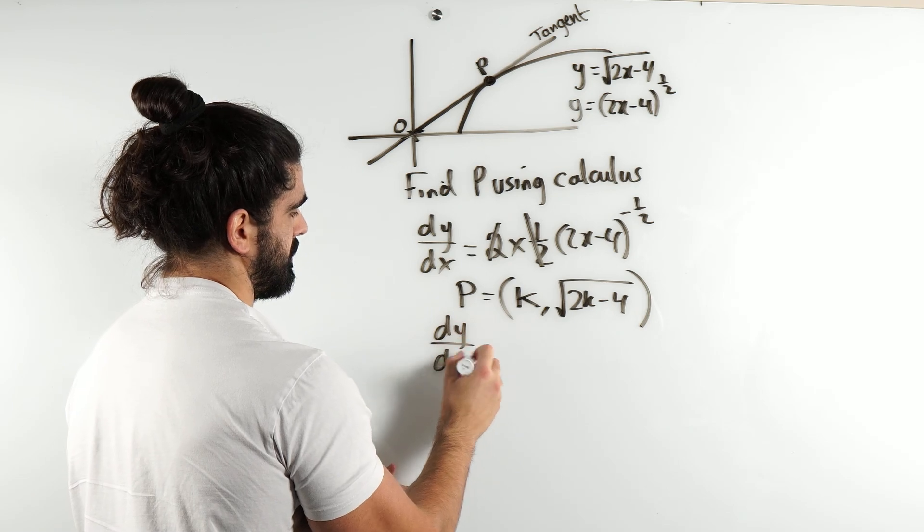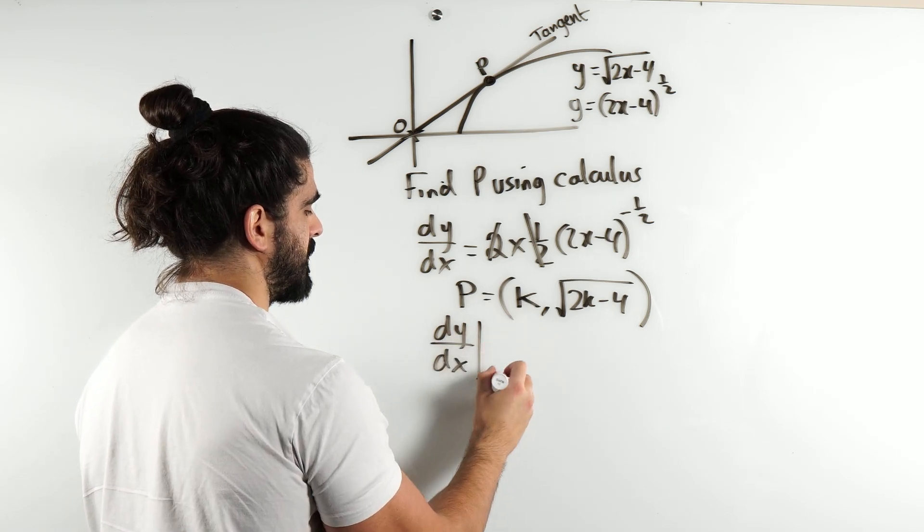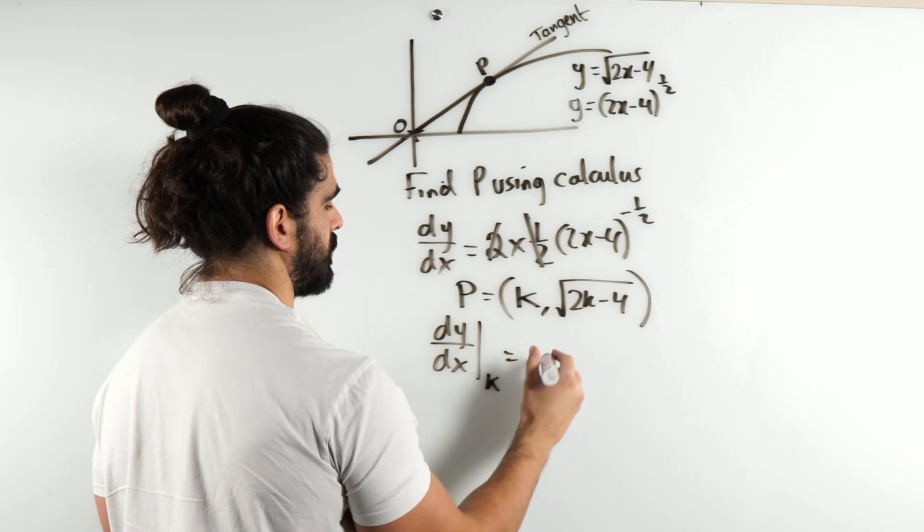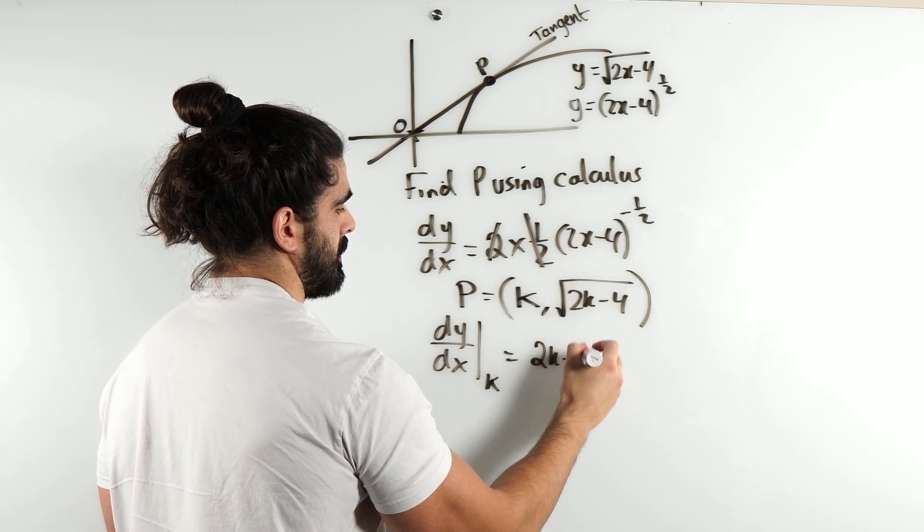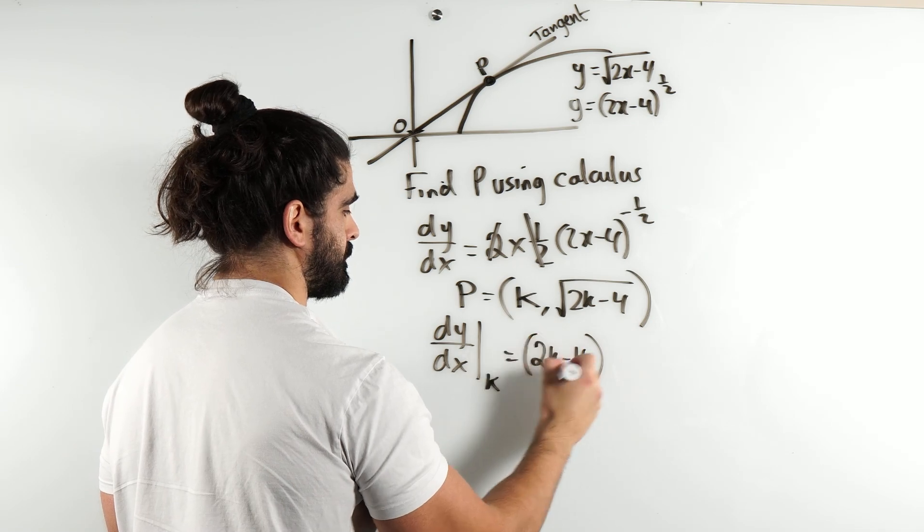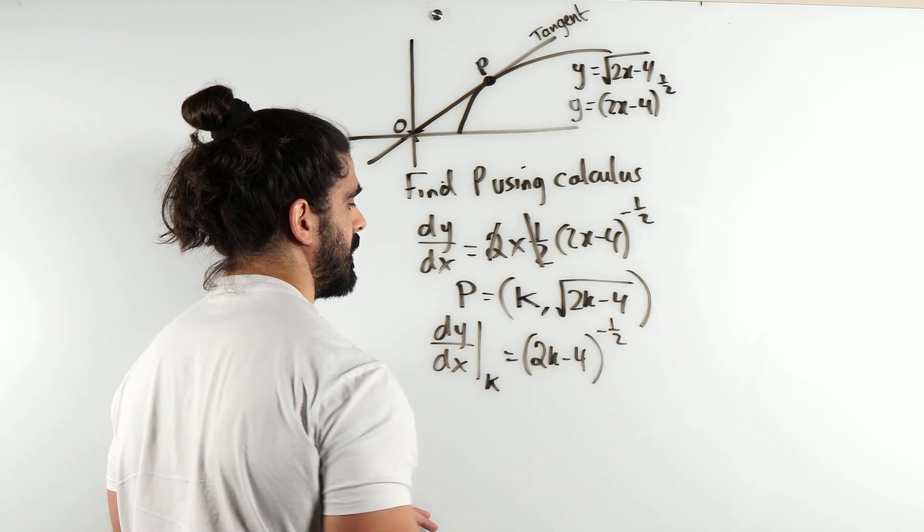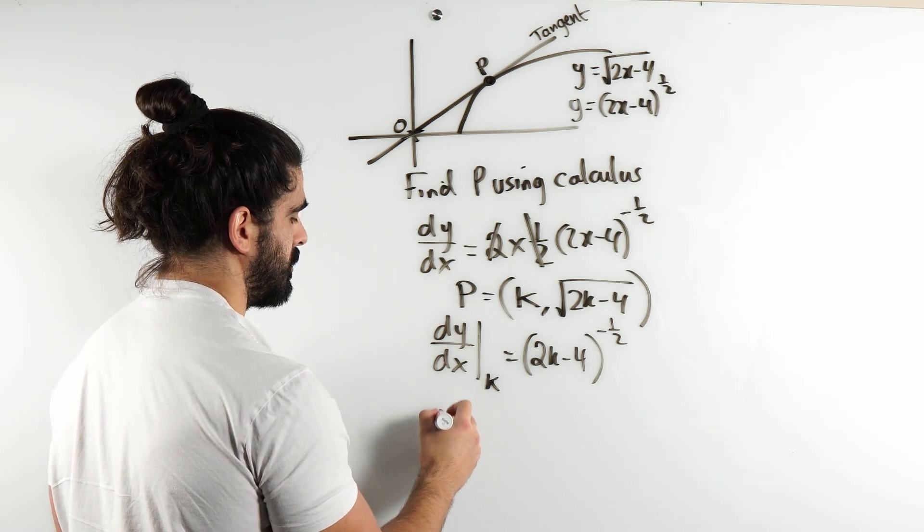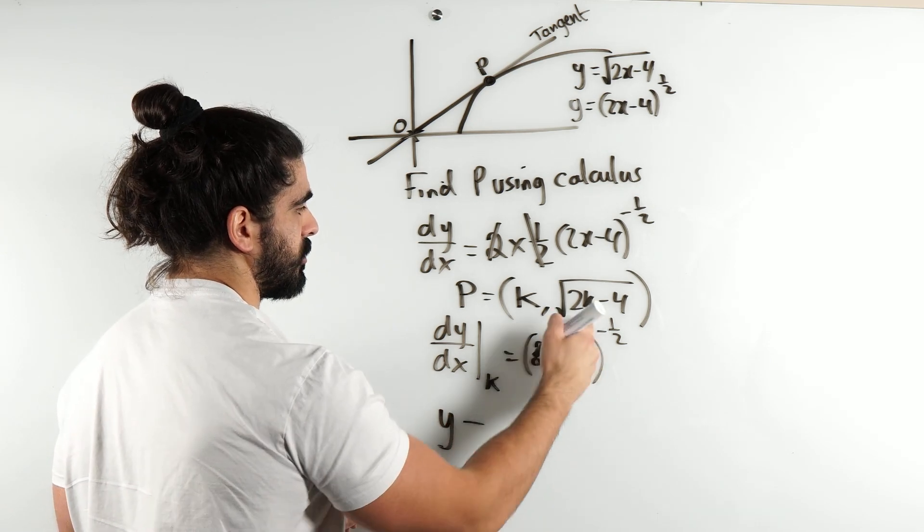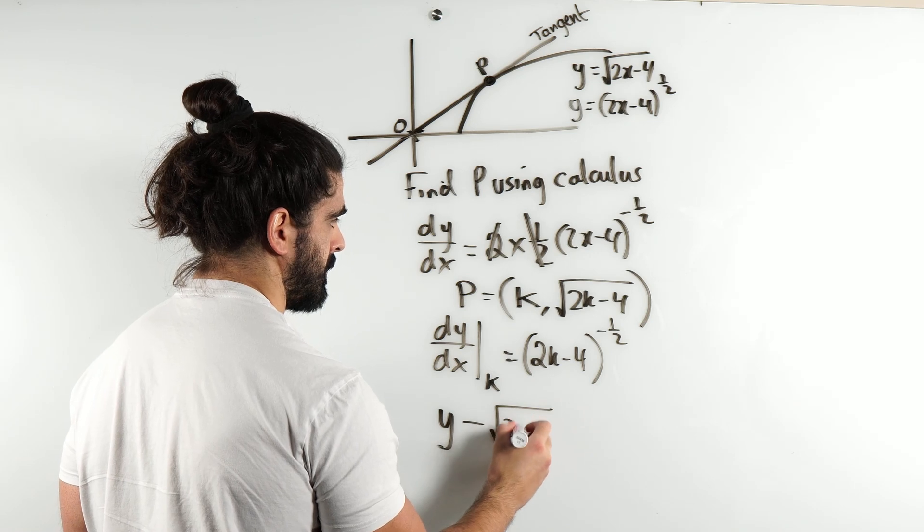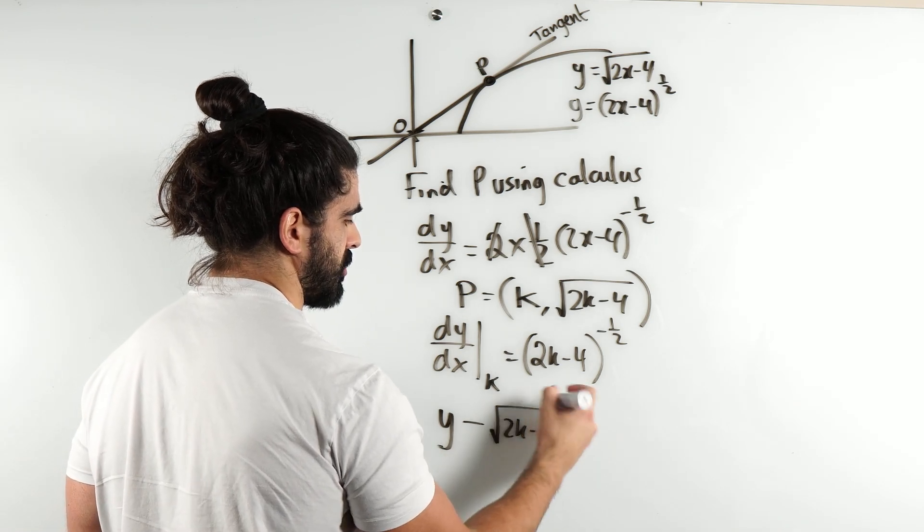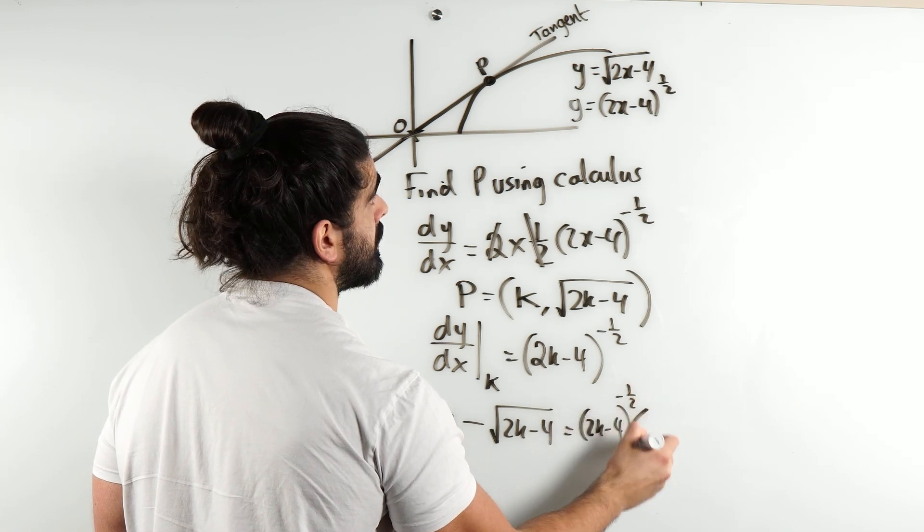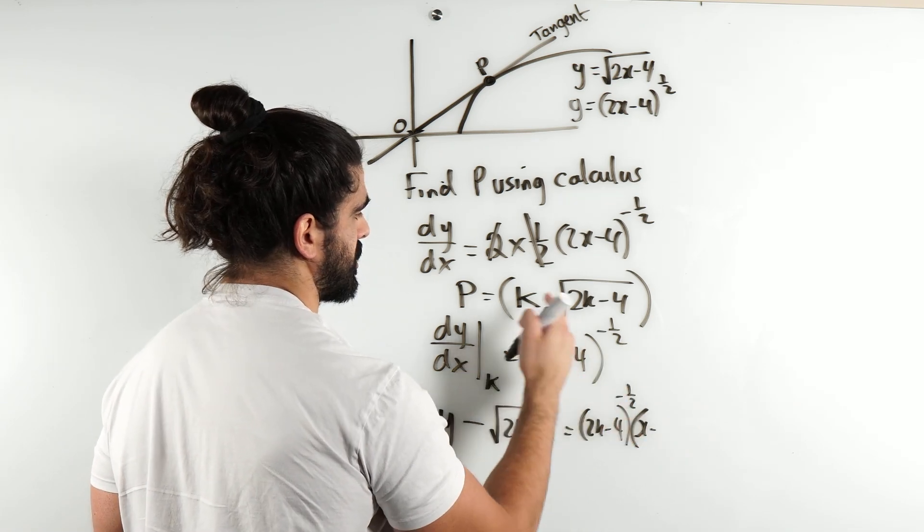So, the dy by dx at the x-coordinate of k is 2k minus 4 to the power of minus half. So, we can actually find the equation of this line using y minus y1. y minus the y-coordinate is the gradient times x minus the x-coordinate of k.